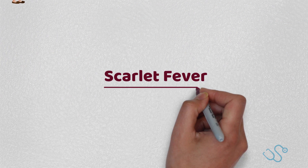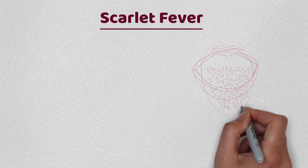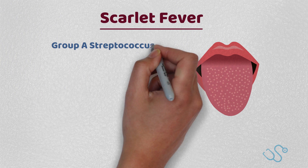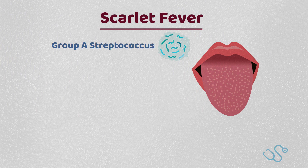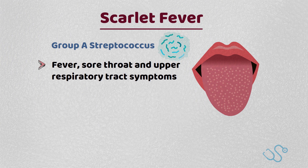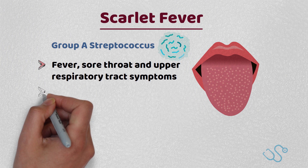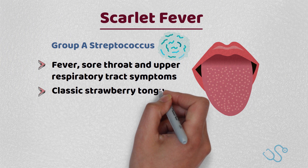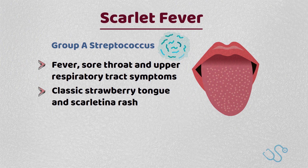Scarlet fever is a bacterial infection caused by Group A Streptococcus, typically pyogenes. It's commonly seen in children around 4 years old with fever, sore throat and upper respiratory tract symptoms, followed by a classic strawberry tongue and a scarlatina rash. The rash itself is usually erythematous, starting first typically on the torso and sandpaper-like in texture.